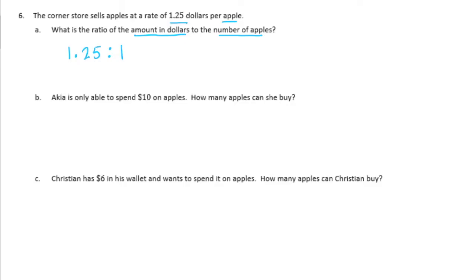Ikea is only able to spend $10 on apples. How many apples can she buy? For this, I'm going to do a double line diagram. Because we're only going up to $10 and we can count by quarters. I'll do money, this is apples.